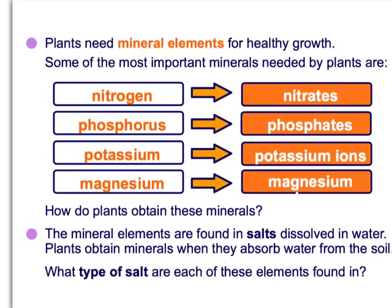So what minerals are actually needed for healthy growth in plants? The main minerals we're going to talk about today are nitrogen, which comes in the form of nitrates; phosphorus, which comes in the form of phosphates; potassium, which comes as potassium ions; and magnesium as magnesium ions.